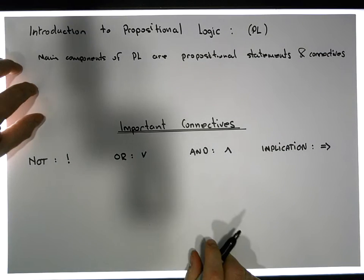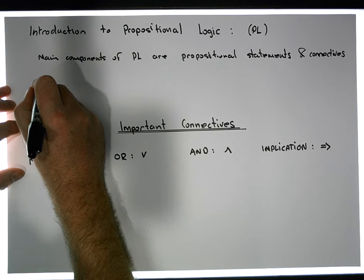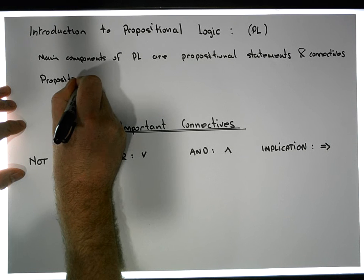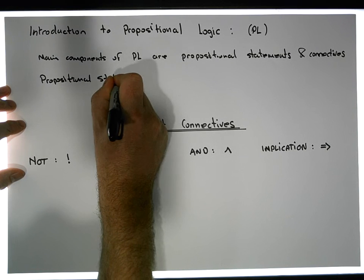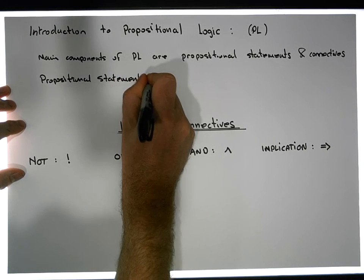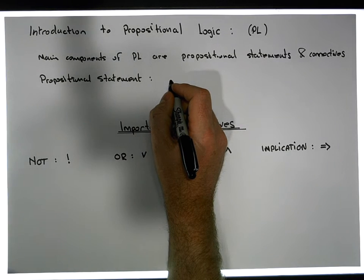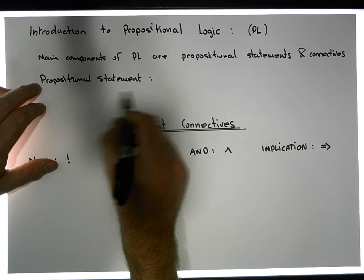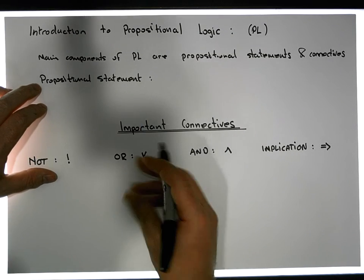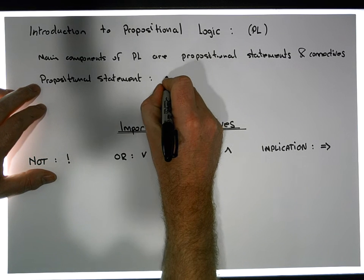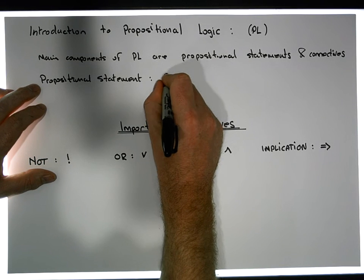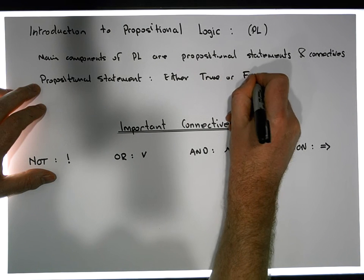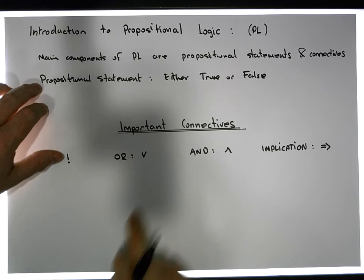By a propositional statement, we mean a statement that's at any particular moment in time — it has a sort of temporal thing associated with it — so it's any statement in English, or any statement in your language, that's either true or false. So any propositional statement is either true or false.